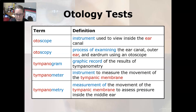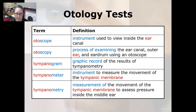A tympanogram is a graphic record of the results of tympanometry, and a tympanometer is an instrument used to measure the movement of the tympanic membrane. Tympanometry is a measurement of the movement of the tympanic membrane to assess pressure inside the middle ear.